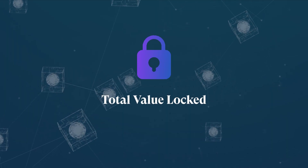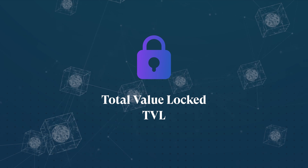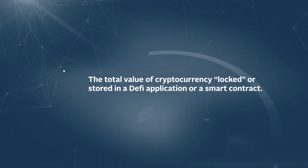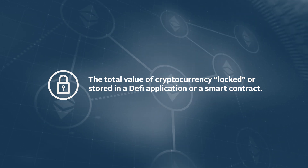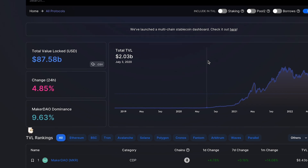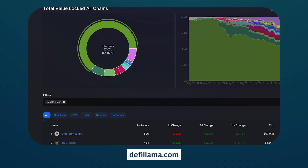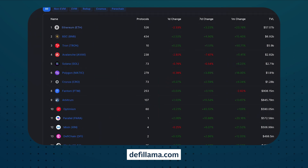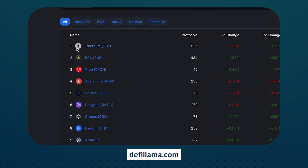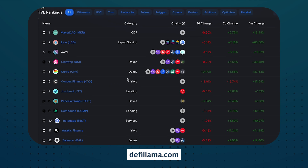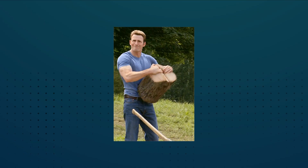The fourth metric used to assess the health of a network is the total value locked, or TVL. This term is used in DeFi to describe the total value of cryptocurrency locked or stored in a DeFi application or a smart contract. Therefore, the TVL can be used to gauge the protocol's popularity, liquidity, and trust among investors. For instance, looking at data from DeFi, we can tell that Ethereum is the most popular chain by TVL, and similarly, MakerDAO is the most popular protocol by TVL. Those were some of the many metrics that help get a sense of the general strength of a network.